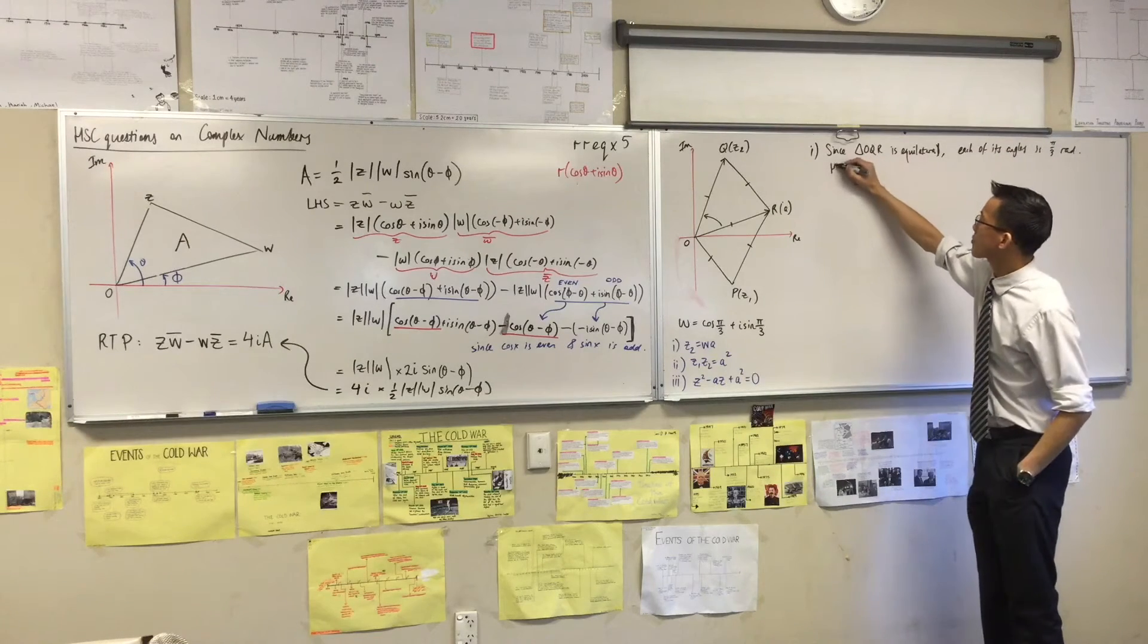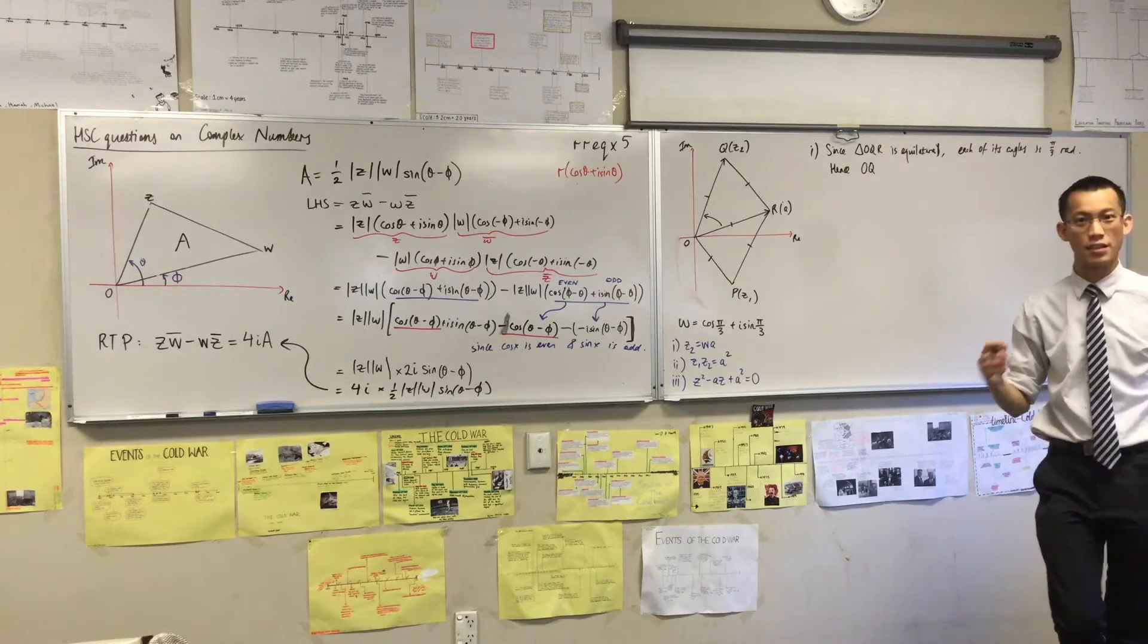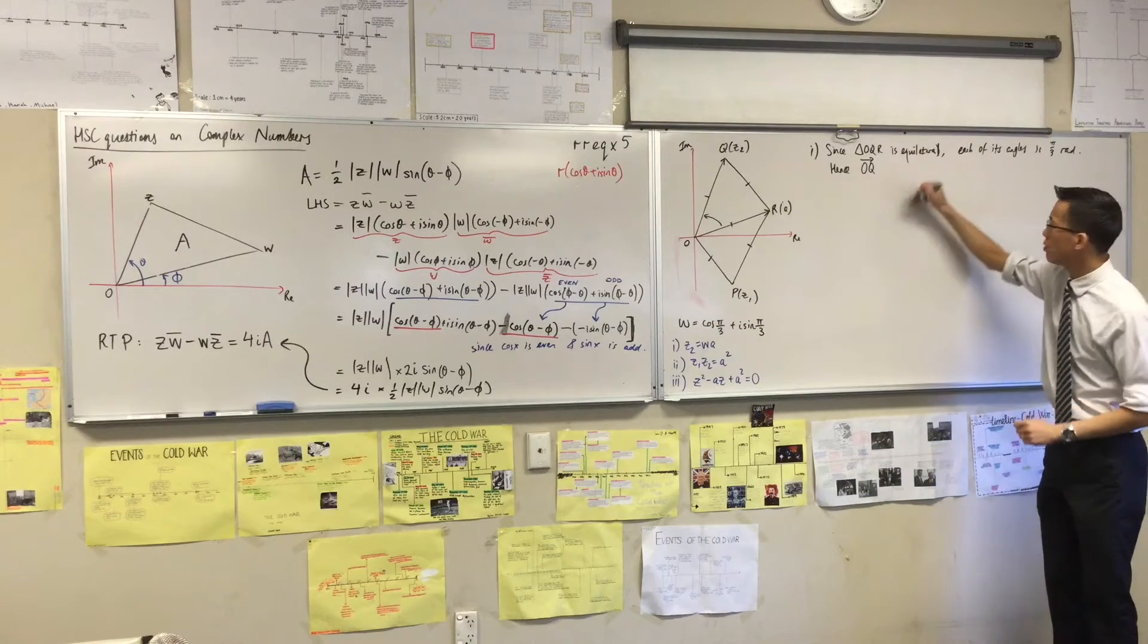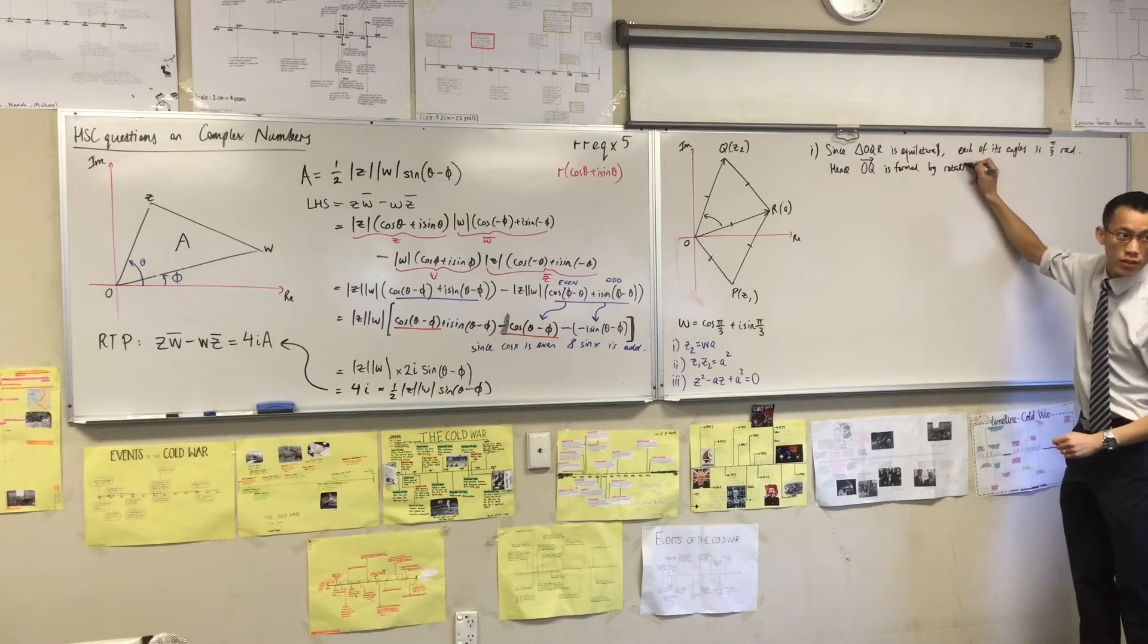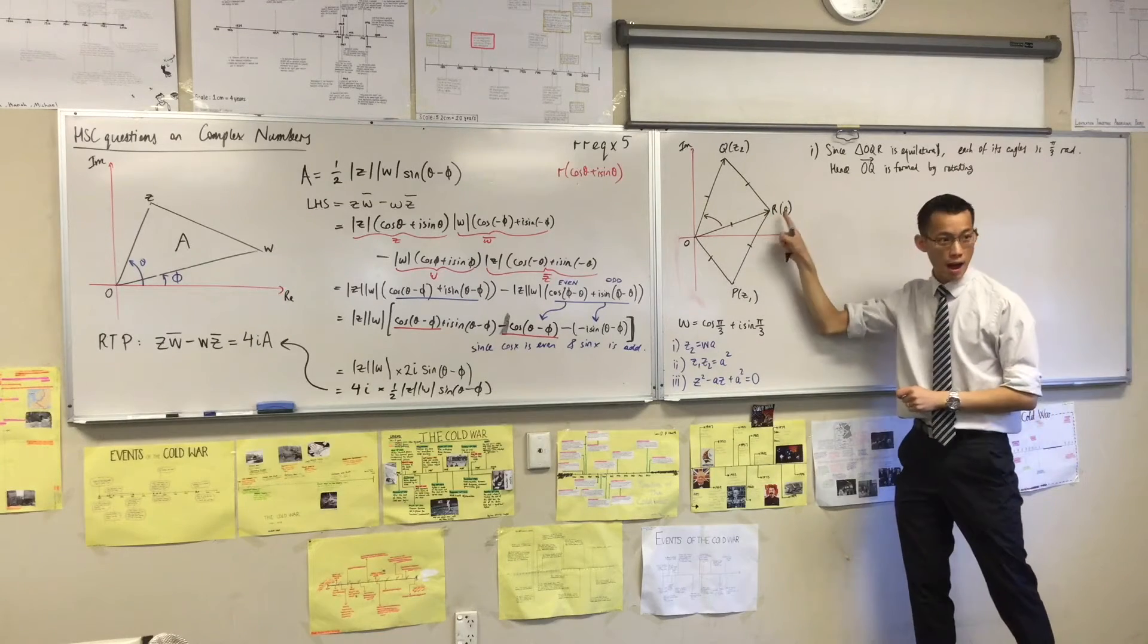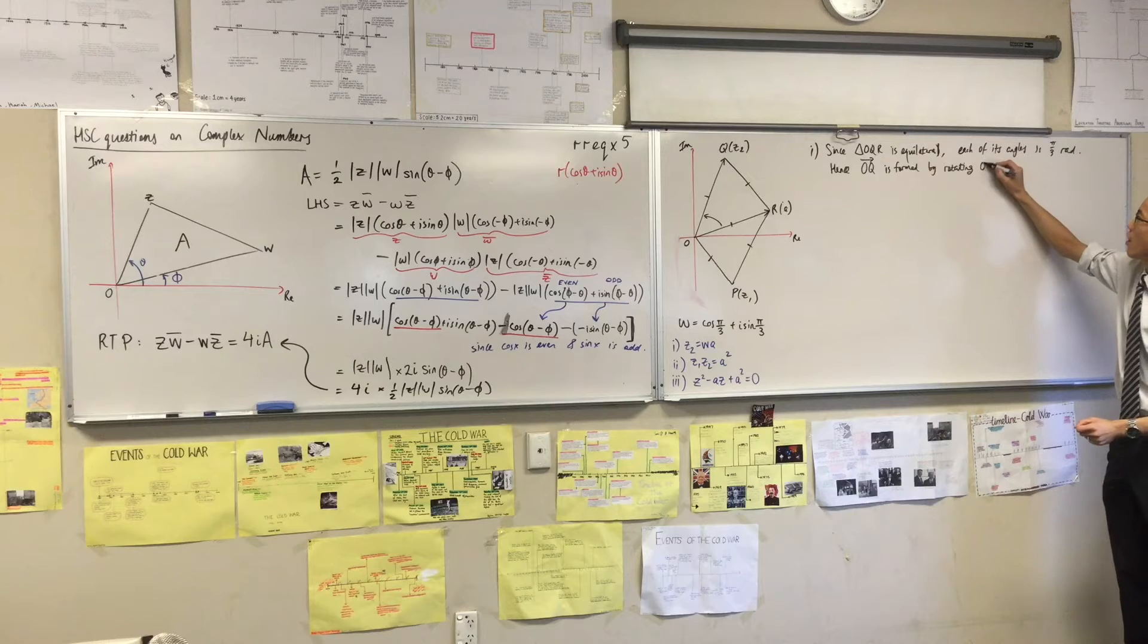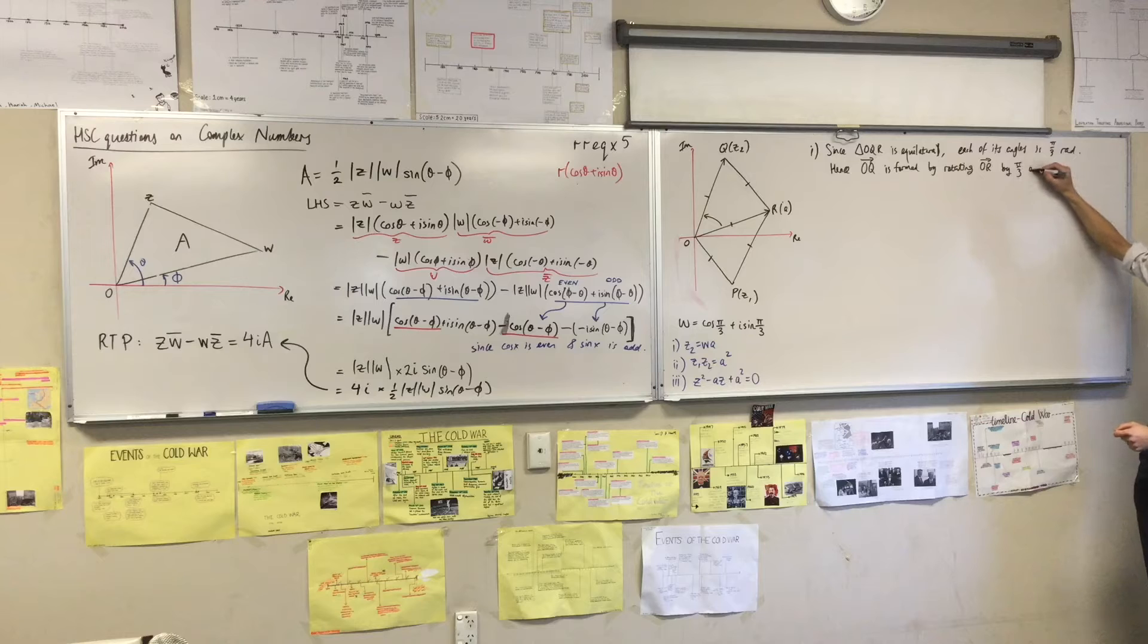I just explained that. So therefore I can say, hence, O, Q—do you remember what's the way that I indicate it's a vector and not just a length? Arrow. Yeah, I have that arrow on the top. And it's O to Q rather than Q to O because those are different vectors. Hence, O, Q is formed by rotating, which vector? Which vector am I basing it on? The vector I'm thinking about is O, R, and I'm going to rotate that by π on three, which is where W is going to come in. So I'll get to W in a second. It's formed by rotating O, R by π on three anticlockwise.